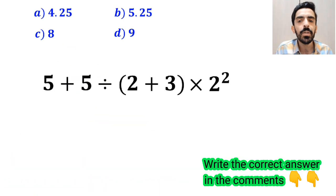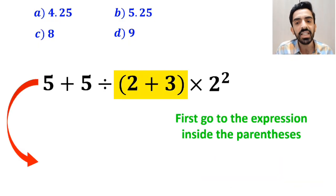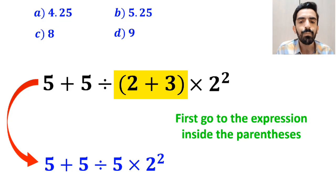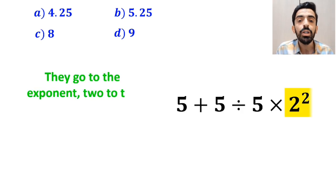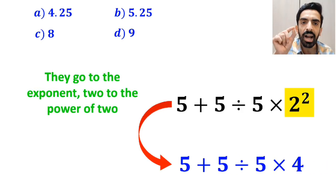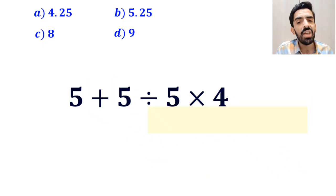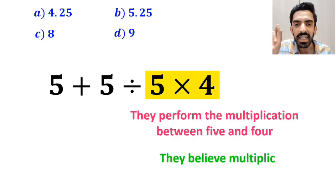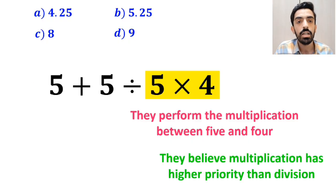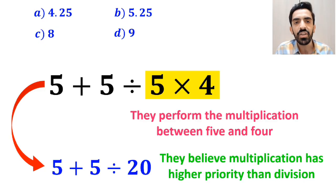Also, some other people, to solve this question, first go to the expression inside the parenthesis, and instead of this expression, they write 5 plus 5 divided by 5 times 2 to the power of 2. In the next step, they go to the exponent 2 to the power of 2, and simplify this expression to 5 plus 5, then divided by 5 times 4. Then they perform the multiplication between 5 and 4, because they believe multiplication has higher priority than division. So instead of this expression, they write 5 plus 5 divided by 20.